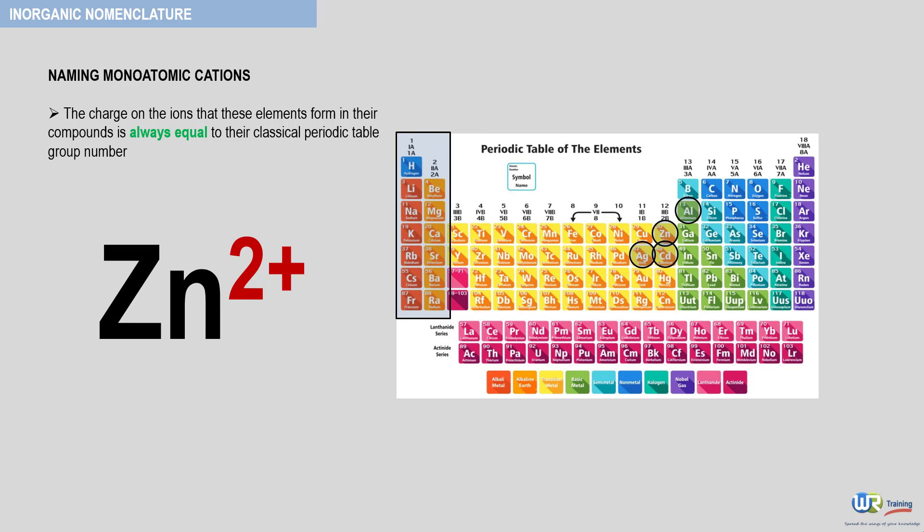Cadmium is also present in group 2B. Therefore, the cation will be Cd2+. And silver is present in group 1B, and therefore the corresponding cation will be Ag+.